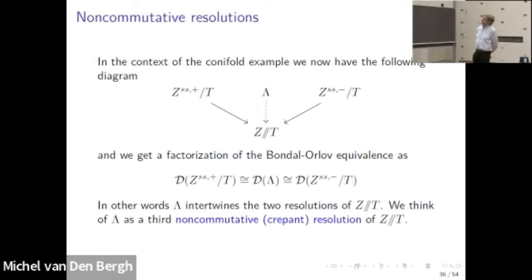Going back to the picture of the two resolutions, we now have a third object — the non-commutative ring lambda — which I put in the middle for good reason. It turns out that the Bondal-Orlov equivalence, given a couple of slides earlier, is most easily seen by factoring it through this lambda. I think of lambda as a third resolution, namely a non-commutative crepant resolution, because it satisfies the analogue of crepantness in commutative algebraic geometry.